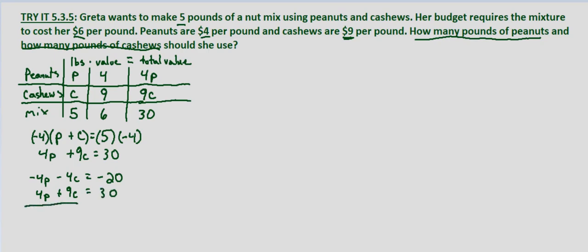Now we add the two equations to eliminate P. Negative 4P plus 4P cancels. Negative 4C plus 9C gives 5C. Negative 20 plus 30 gives 10. So 5C equals 10, and dividing both sides by 5, we get C equals 2 pounds of cashews.